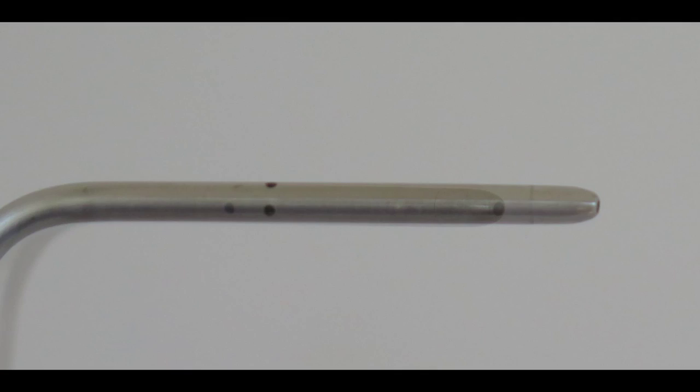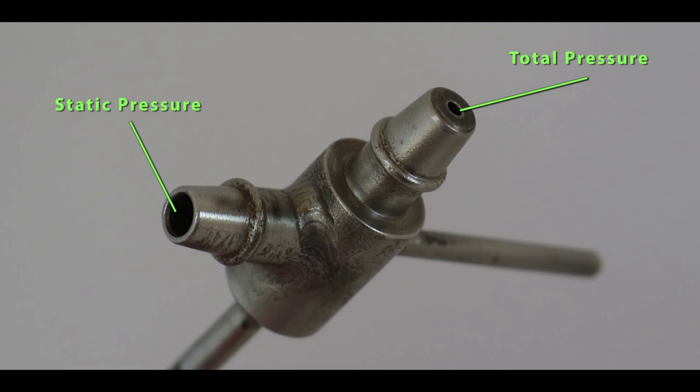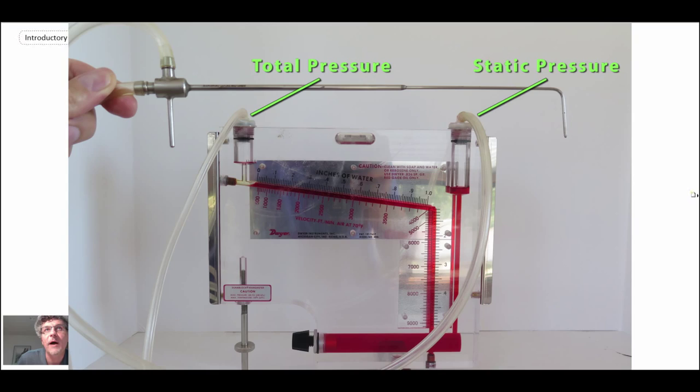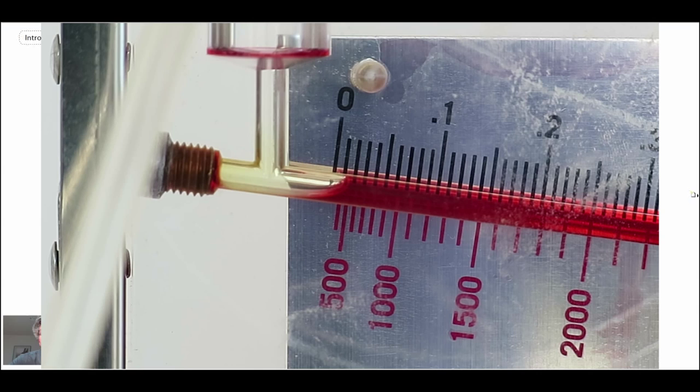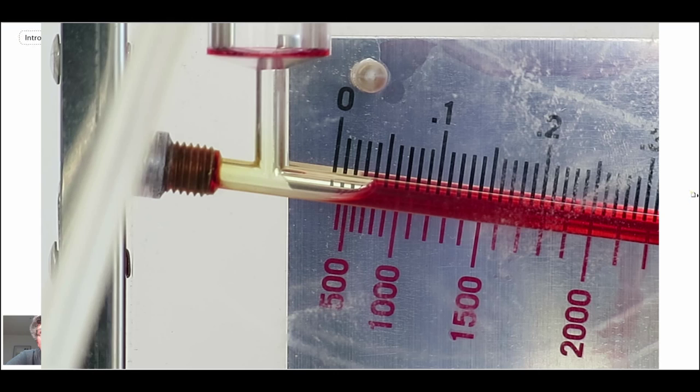Here's an incline manometer. We're going to hook the pitostatic tube up to the incline manometer. One tube goes to the static, one goes to the total. Let's see what happens when we turn on a flow and put the pitot tube into it. We can see that the manometer is increasing. I've sped this up because it takes a while with this fluid to react.